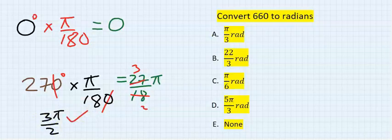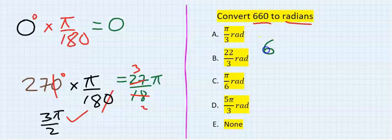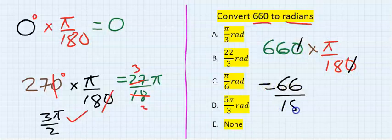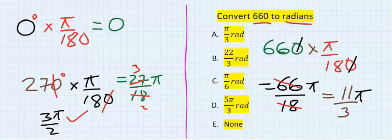Convert 660 degrees to radian. Now you have 660. You multiply with pi over 180. Zero we take away zero and you're left with 66 over 18 pi. 6 in 66 you're going to have 11, and 6 in 18 you're going to have 3. You have 11 pi over 3.